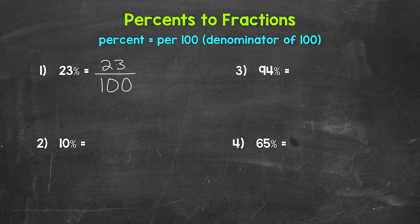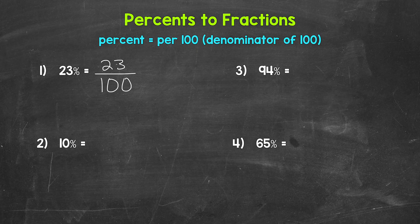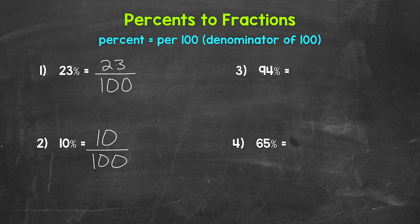Let's move on to number two, where we have 10%. So we need to drop that percent symbol and put this over 100. So 10 over 100, 10 hundredths. And that's 10% as a fraction, but we can simplify here.